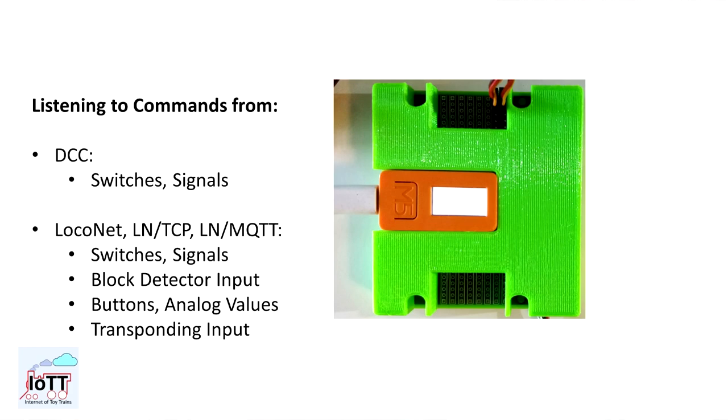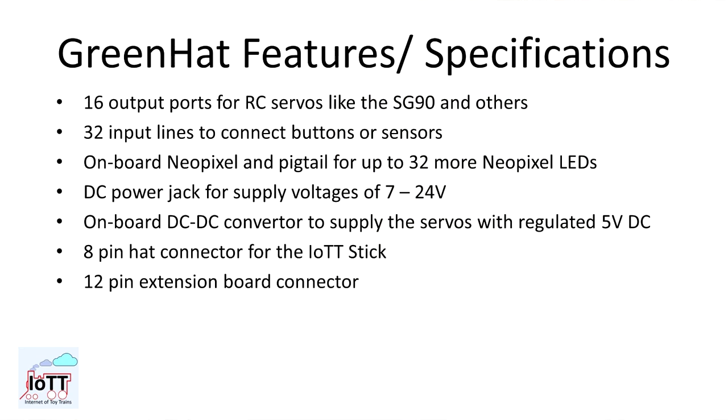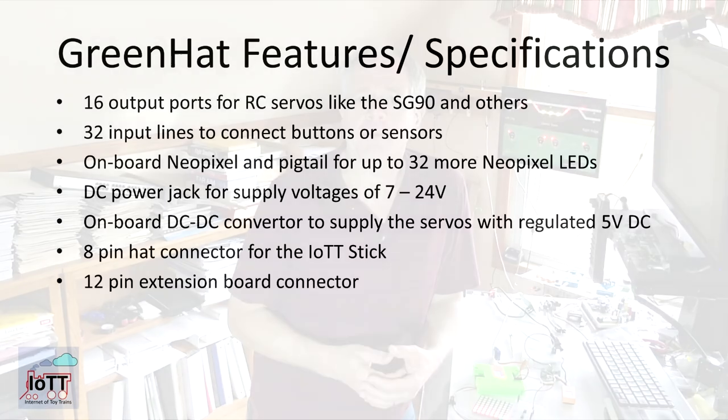If you watched the last few videos, you know that the project that consumes most of my time right now is the Green Hat, which is a 16-channel servo decoder to drive turnouts and semaphore signals. Besides the servo output, it also provides two input lines per channel that can be used to connect buttons or sensors. Furthermore, it has two NeoPixel LEDs per channel to indicate switch or signal positions.